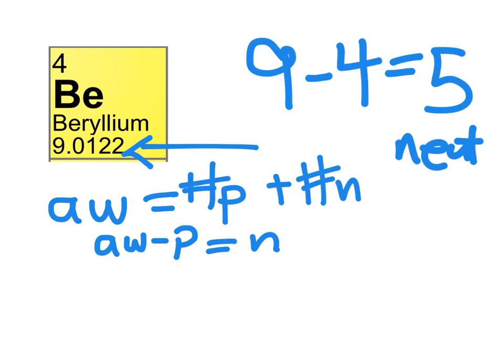Sometimes we might have the same number of neutrons as we did protons and electrons. This is not always true though, so it's always best to do the math to make sure you know exactly how many neutrons there are.